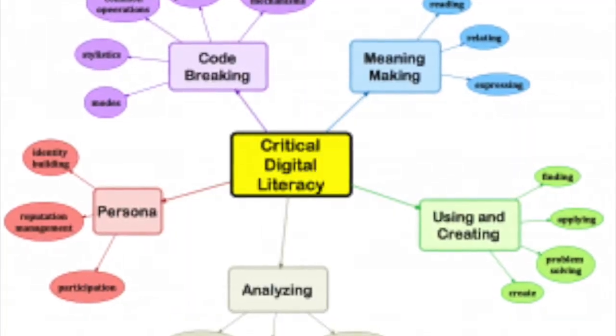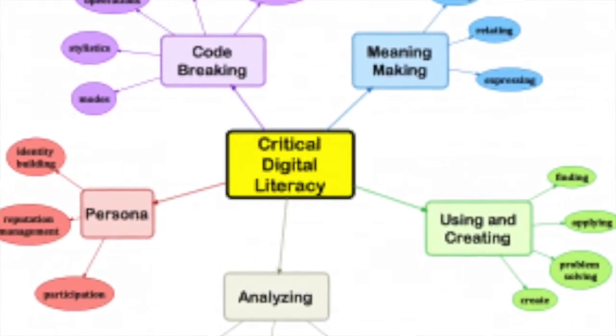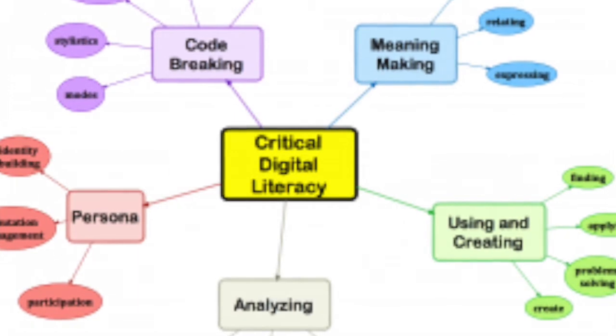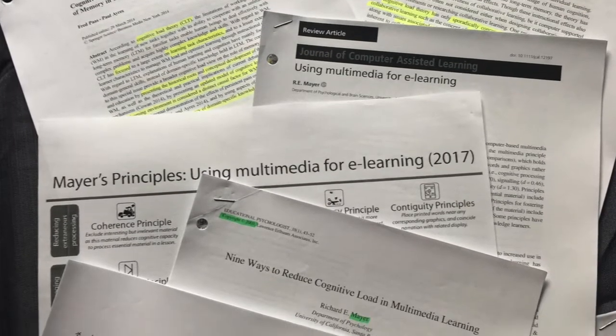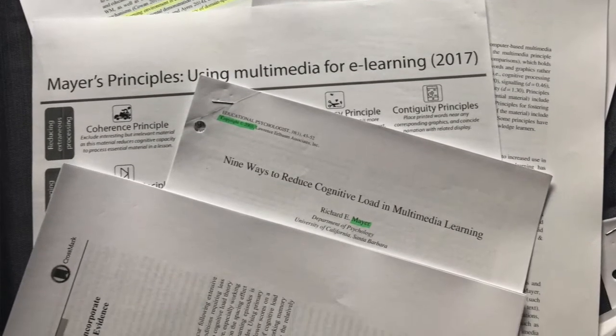I've looked at critical digital literacy frameworks. The one I use consistently is from Henriksen and Coombs, which I use in my teaching. It covers code breaking, meaning making, using, analyzing, and creating a digital persona. I looked for connections to how critical digital literacy impacts cognitive load, particularly in the area of multimedia instruction from the research of Mayer and Sweller. I've been doing a lot of reading and rereading, trying to put all the references together and make sense of where the relationships lie.